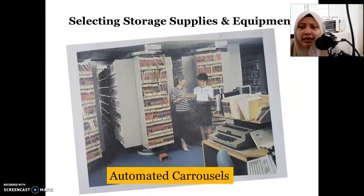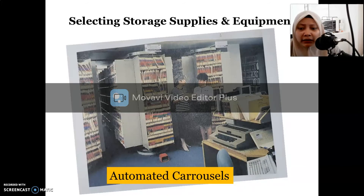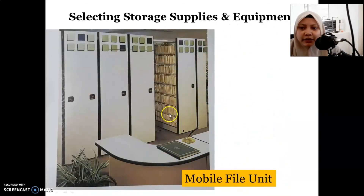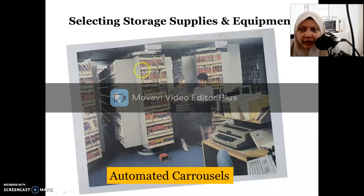This is another example of a mobile unit called an automated carousel. Unlike the previous mobile file that moves manually, this one moves automatically. For example, files hang and rotate — when activated, they move to the back and then turn to the side, giving you access to the needed section.